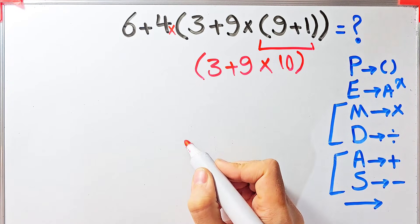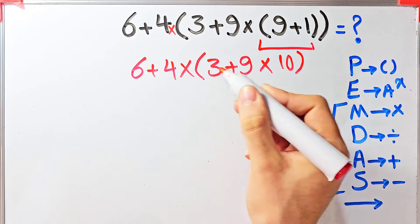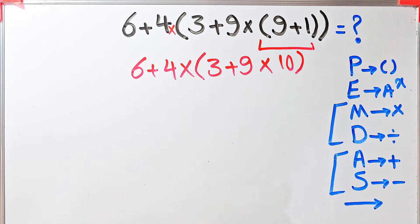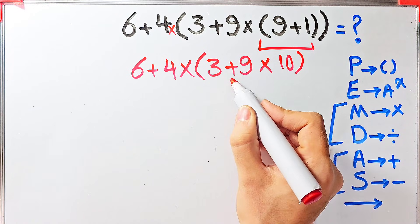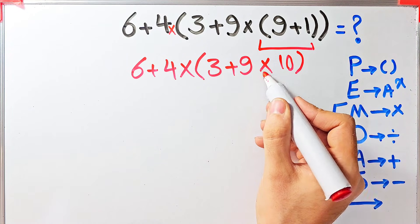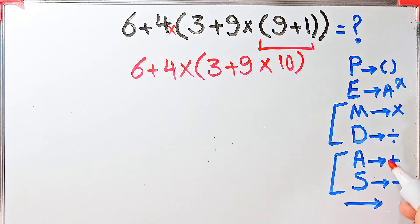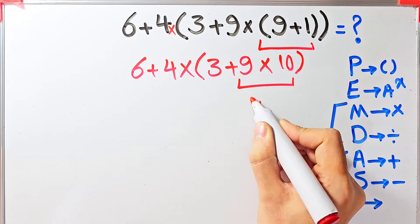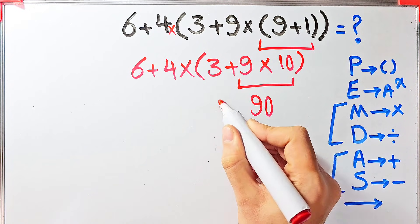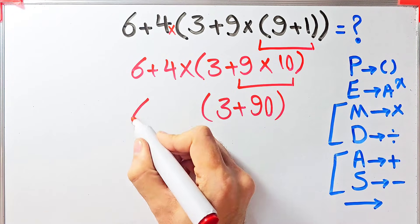The question is 6 plus 4 then times 3 plus 9 then times 10. Again we simplify the parentheses. Inside these parentheses we have addition and multiplication. First we simplify this multiplication because multiplication has higher priority than addition. 9 times 10 equals 90.